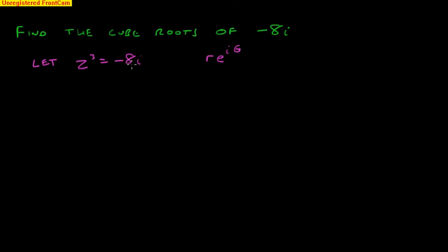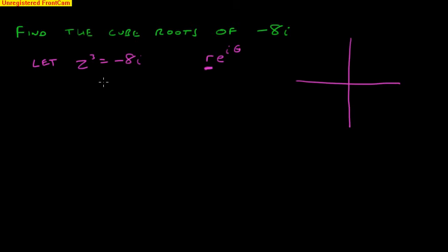So I need to write that in this form. Now r, when you write these things in this form, it must be a positive number. It represents the distance the point is from the origin. I'll come to a picture in a second. The r must be positive — it represents the distance to the origin. So in this case, this is going to be the number 8 times by negative i. The r must be positive because it's a distance.